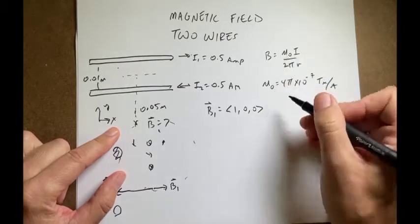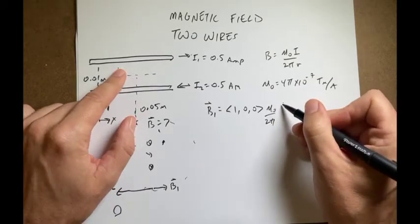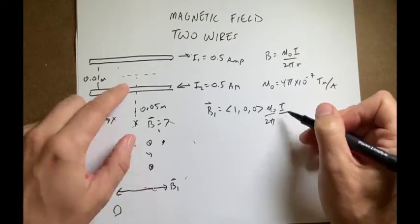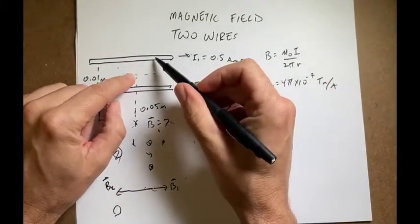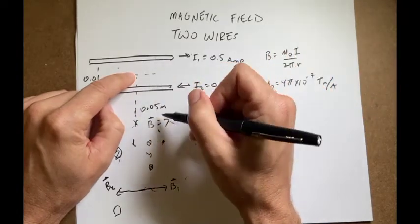And then I'm going to have mu naught over 2 pi times i, which is, I'll just write that as i for right now, over the distance. So how far is this going to be? This is, I should have used a better distance.